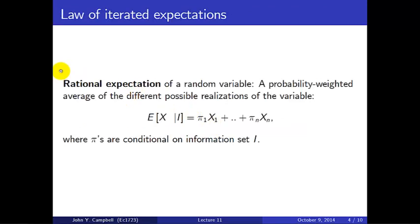Now I'm going to state the key mathematical result that we need here, which is the Law of Iterated Expectations. I'll start by defining the rational expectation, or sometimes called mathematical expectation, of a random variable. That's just a probability-weighted average of the different possible outcomes or realizations of the variable. So if we have a random variable x that can take values x1, x2, up to xn, then the expectation of x is a probability-weighted average of all the different outcomes.